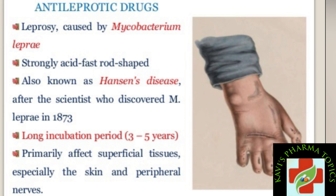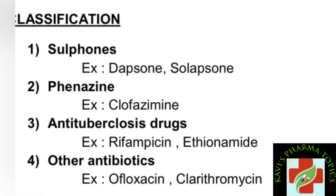Next, the classification of anti-leprotic drugs. There are four classes in the classification. The first class is sulfones — examples include dapsone and solapsone. Among these, dapsone is the most important anti-leprotic drug.